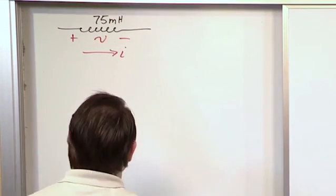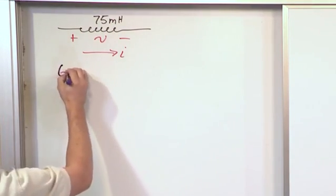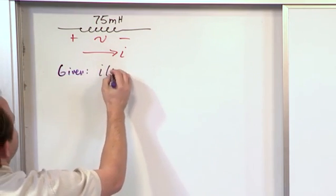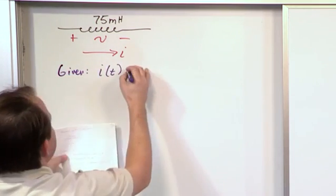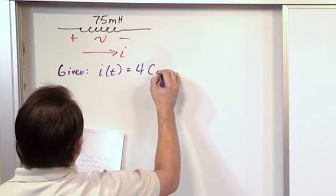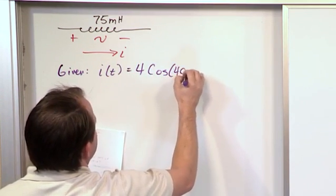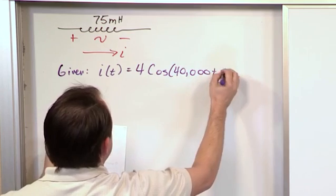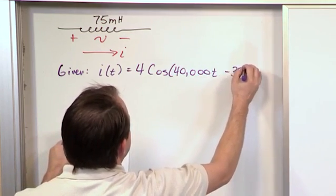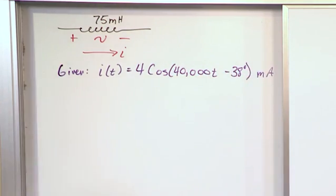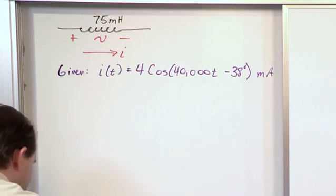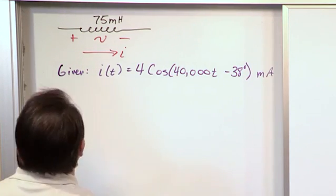So we're given in this case, we're given that I(t) is equal to 4 times the cosine of 40,000t minus 38 degrees, and that's milliamps. So that's what we're given. So what we want to know, so that's kind of the problem statement, all right?